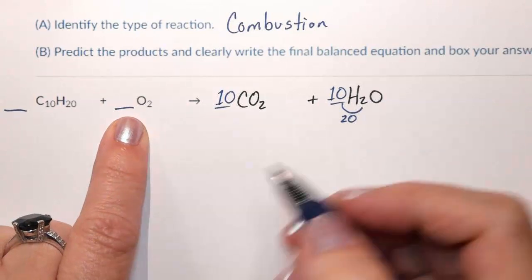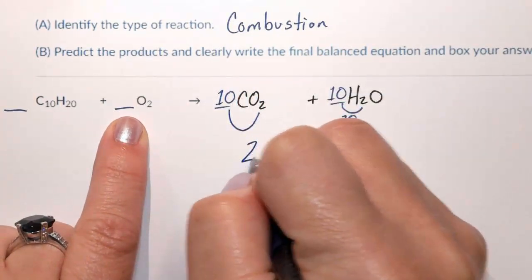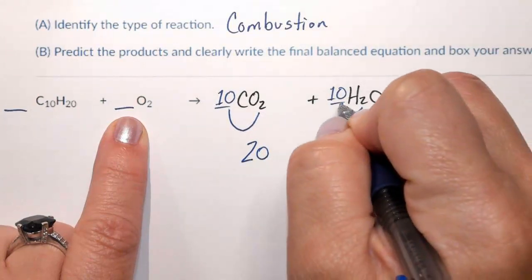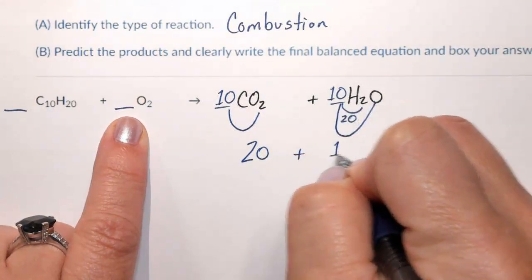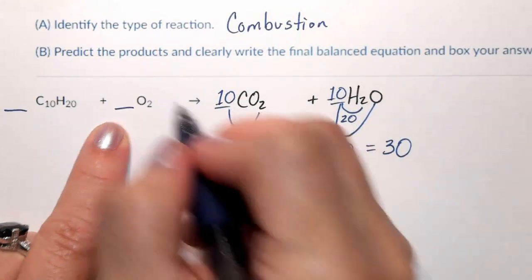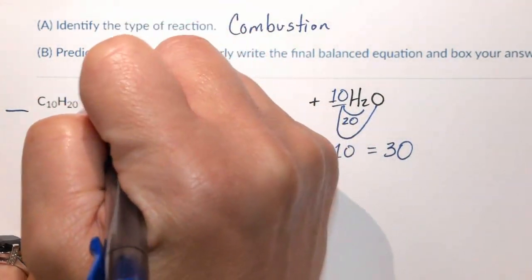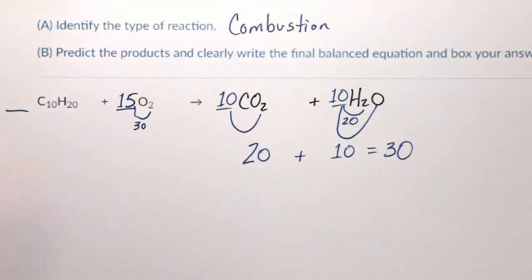Now we have 2 oxygens on the left, and on the right we have 10 times 2 is 20, plus 10 equals 30 oxygens on the right side of the arrow. So 2 times what is going to equal 30? 2 times 15 will equal 30.